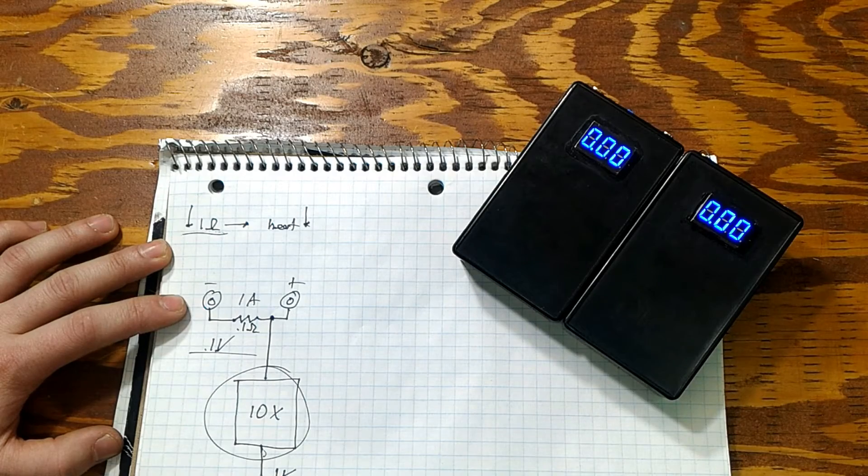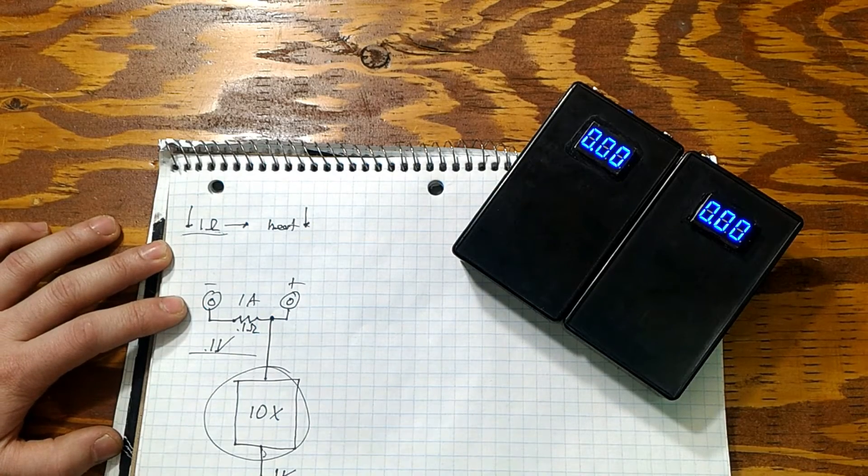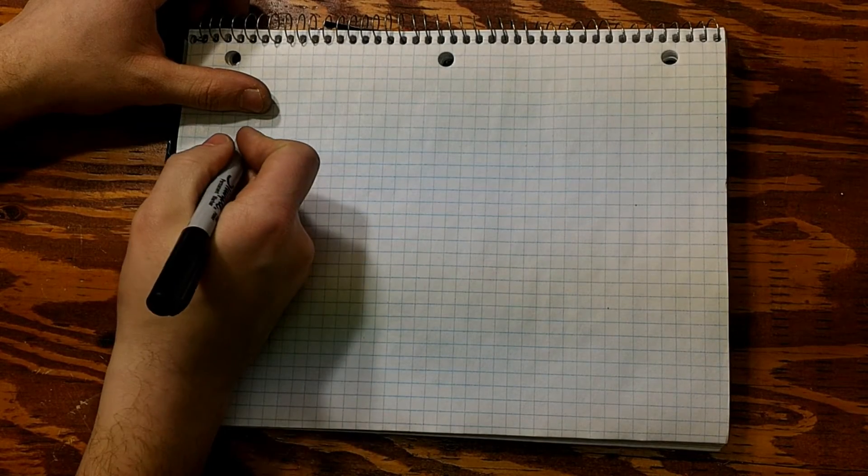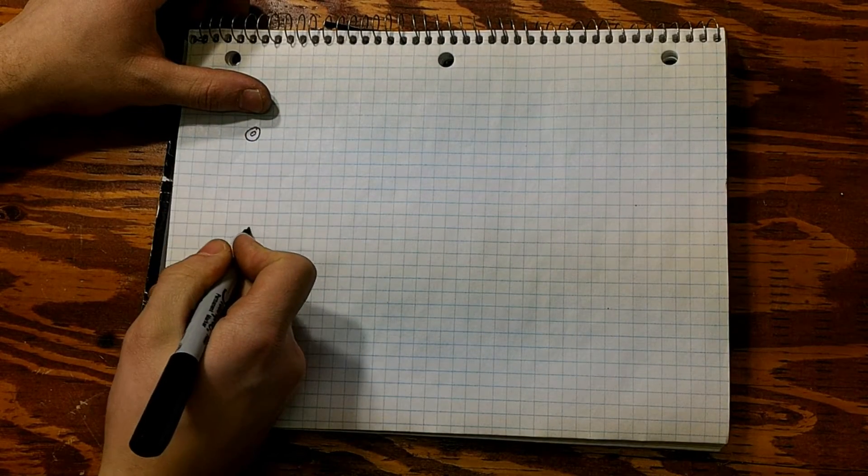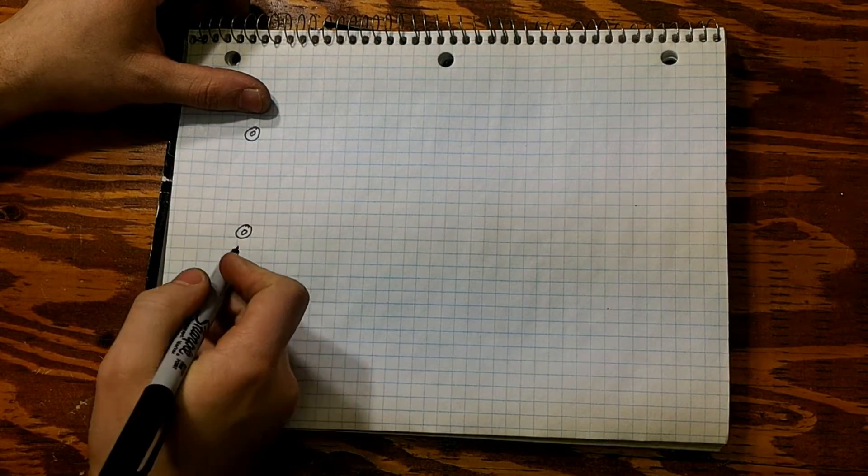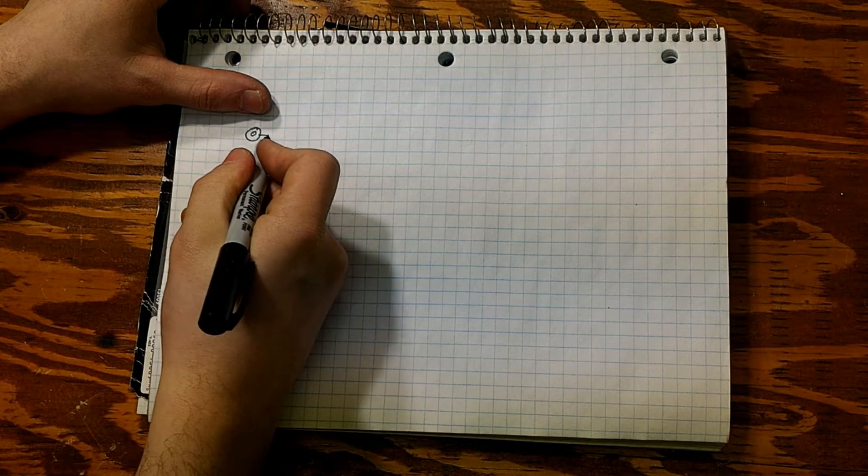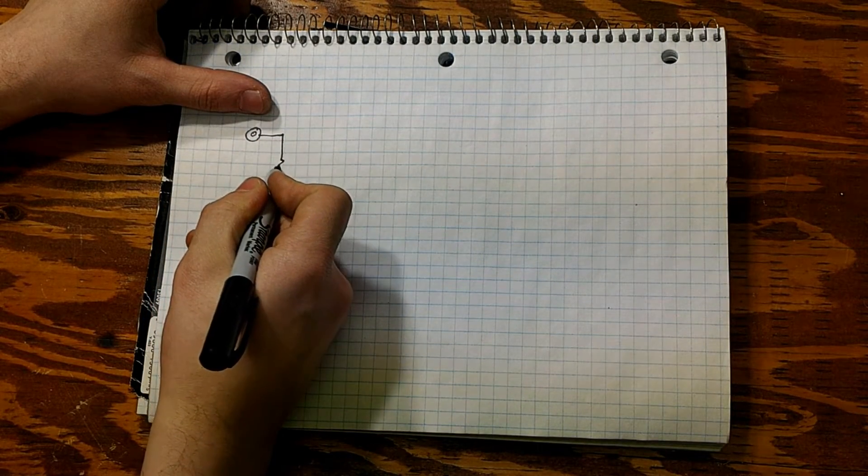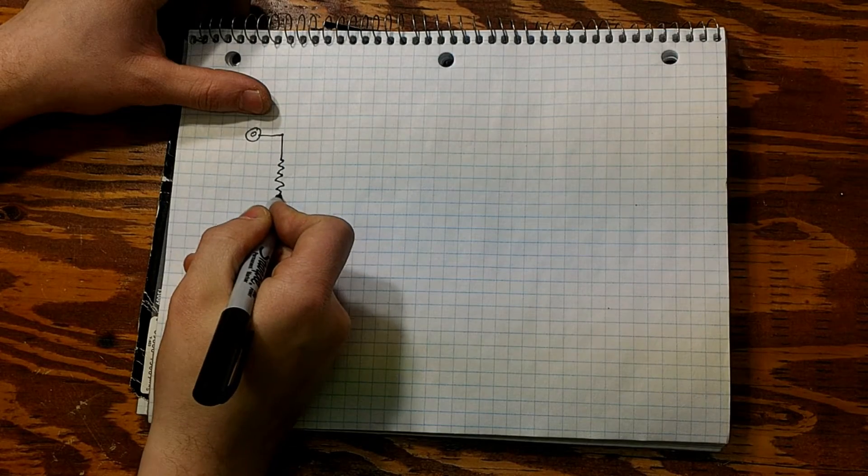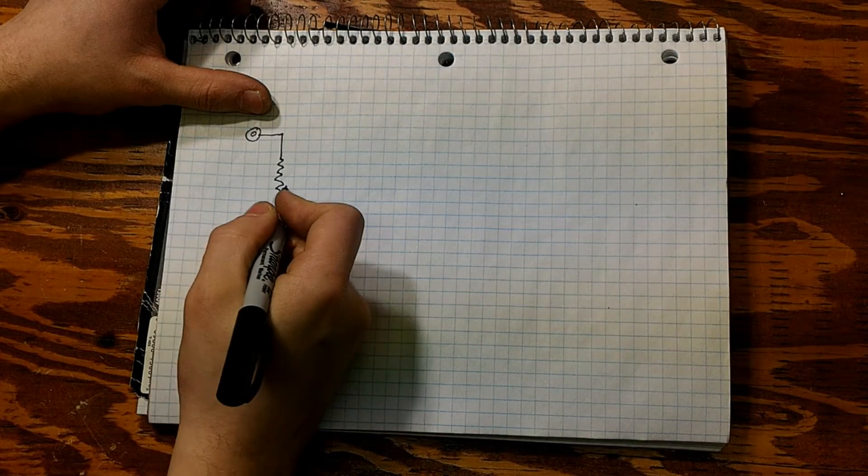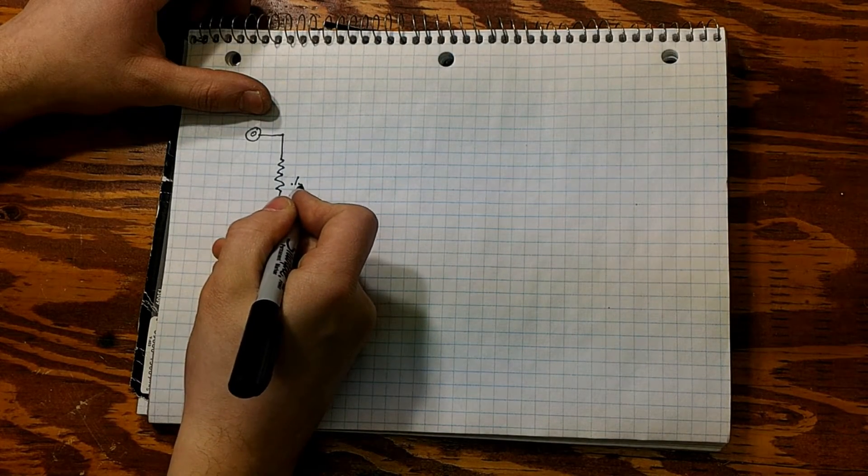First of all, to really understand how the circuit works, let's draw our input jacks on our ammeter and then we will draw our 0.1 ohm shunt resistor just like so.